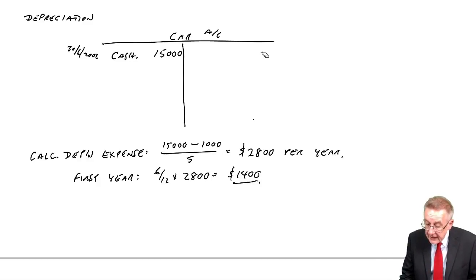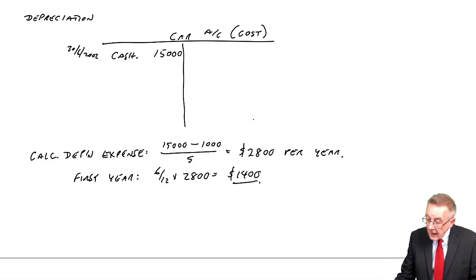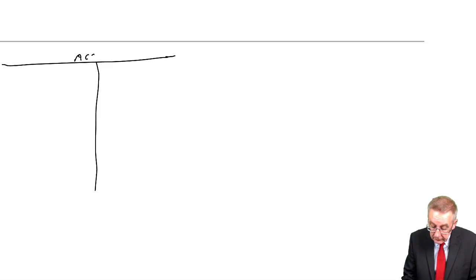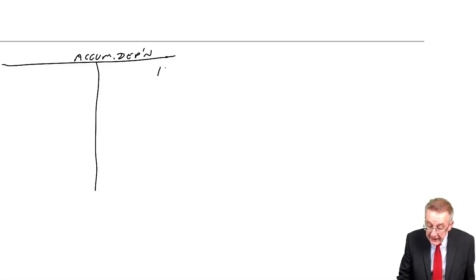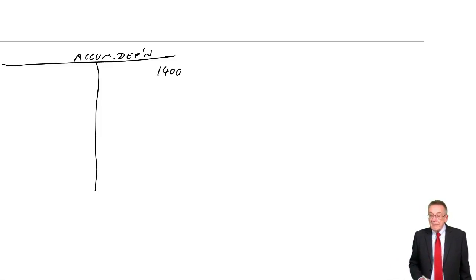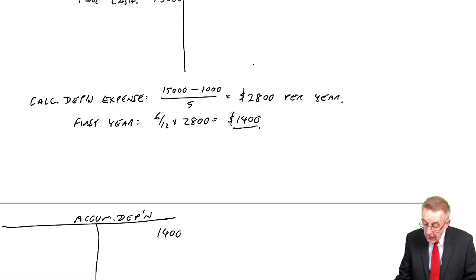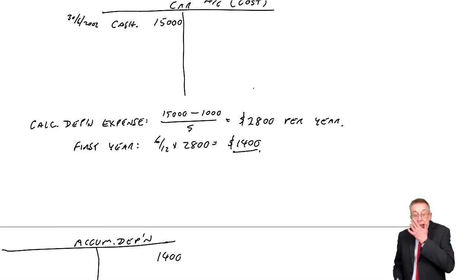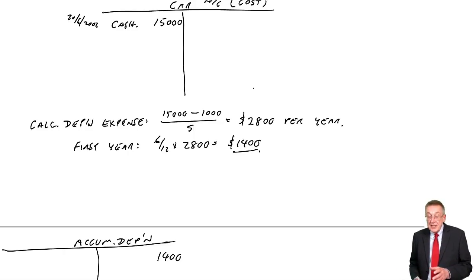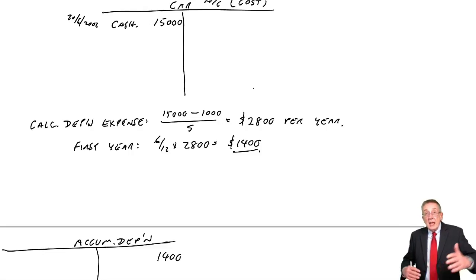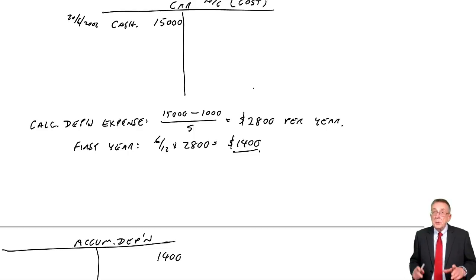So in fact, we leave the car account as it is, showing the cost. We open up a new account called accumulated depreciation, and instead of crediting the car with £1,400, we credit accumulated depreciation. When we come to do the statement of financial position, we put the two together: on the car account there's a debit of £15,000 (the cost); on accumulated depreciation there's a credit of £1,400 (the total depreciation). We subtract one from the other and show the net value on the statement.